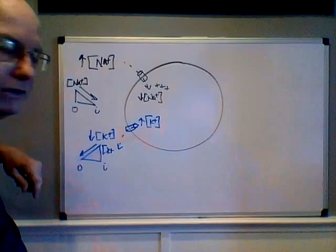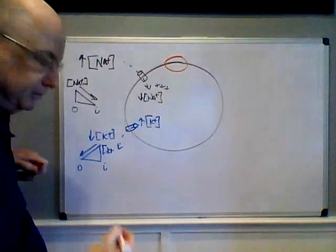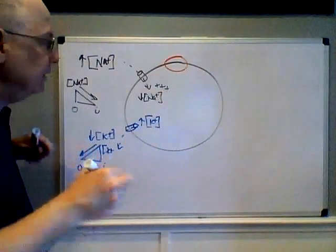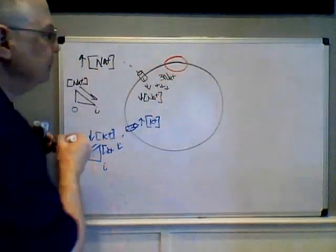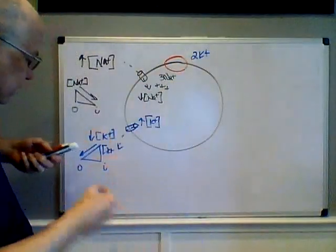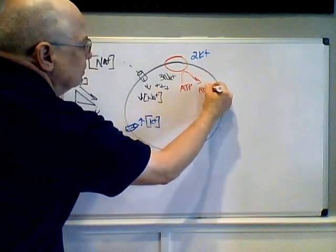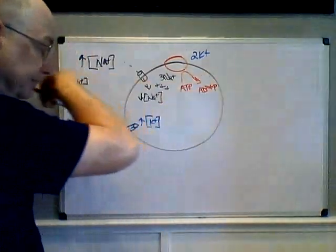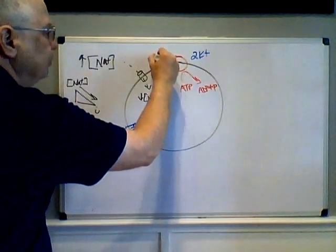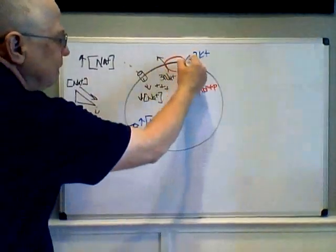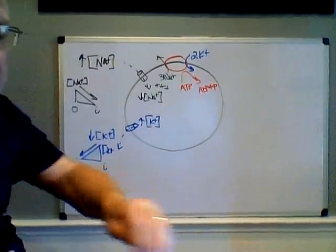Mother Nature, in her grand design, added into our cell membranes a protein pump. This protein has the ability to bind three intracellular sodium ions and two extracellular potassium ions. It will break down a molecule of ATP — using energy from that phosphate bond to flip — and it literally pumps the three sodiums back out and the two potassiums back in, maintaining this imbalance. Most of your cells are capable of this and do this.